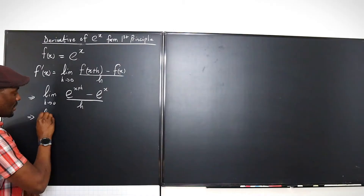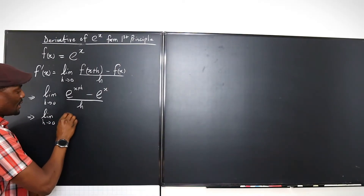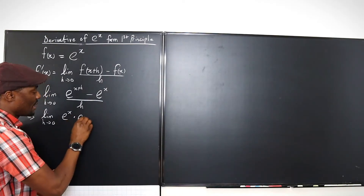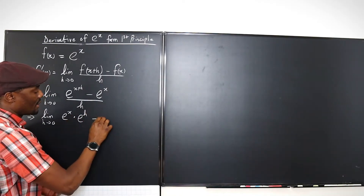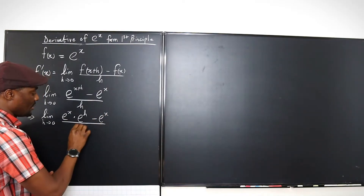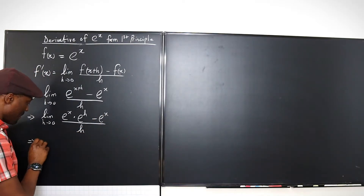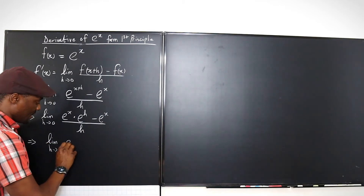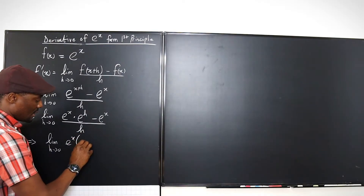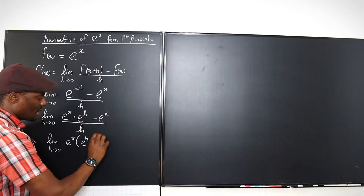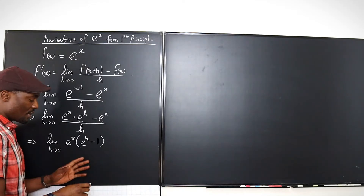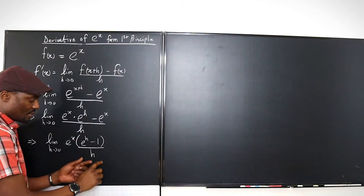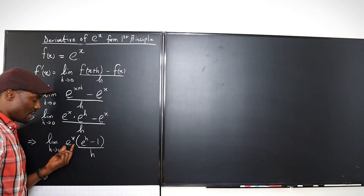This is the limit as h goes to 0 of e to the x — if you apply the laws of exponents — multiplied by e to the h, minus e to the x, all over h. And this gives us the limit as h goes to 0 of e to the x times the quantity e to the h minus 1, if we factor out e to the x.